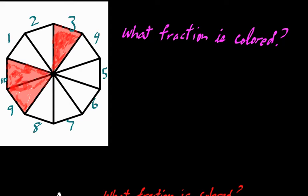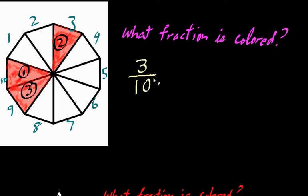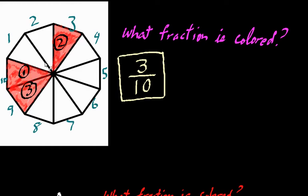Now, which of these are actually colored? It looks like 3 of these triangles are colored in. So 3 out of 10 equal-sized triangles are colored in, meaning the fraction that represents the colored region is 3 tenths. It's very important to remember that they have to be equal-sized regions for us to think of it as a fraction.